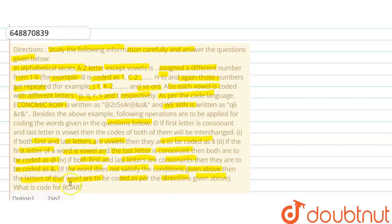What is the code for roar? We have to find out here. In the question, we have A to Z letters given. We have to assign the vowels and consonants. We assign the numbers 1, 2, 3, 4, 5 and 6.